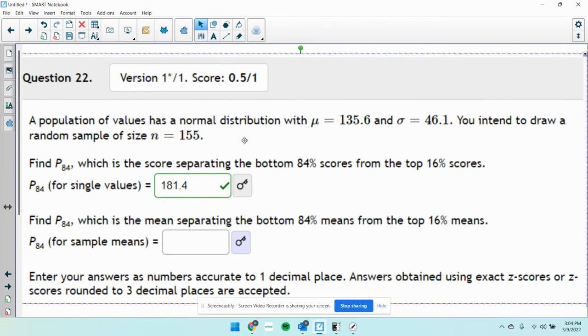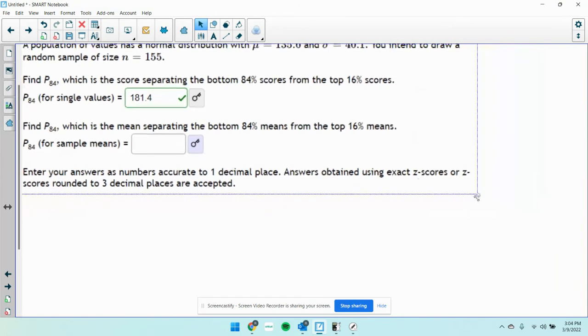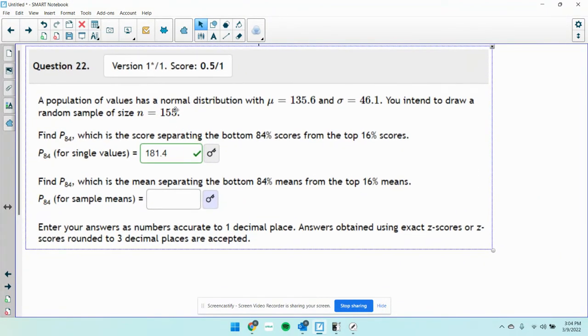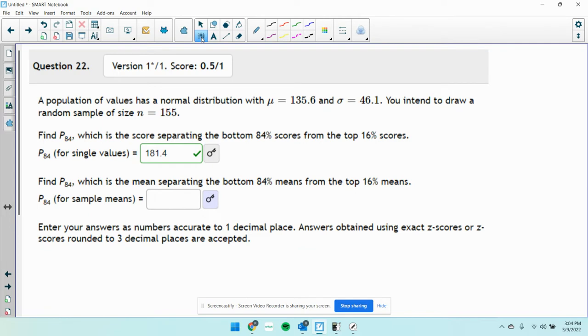This says the population of values has a normal distribution. That's good. You intend to draw a sample of n equals 155. You got this, one of the problems that's just going to be inverse normal.